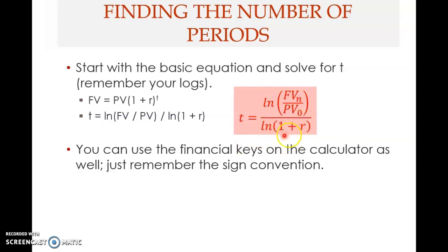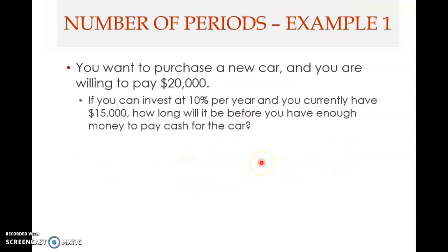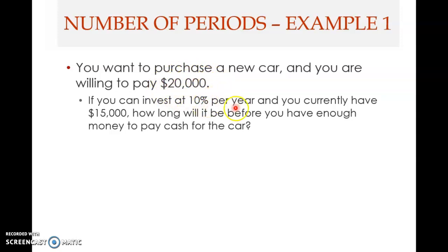When using the financial calculator or spreadsheet, remember the sign convention. Here is the example: you want to purchase a new car and are willing to pay $20,000. You can invest at 10% per year and currently have $15,000. How long will it be before you have enough money to pay cash for the car? The known elements are: future value = $20,000, present value = $15,000, interest rate = 10%. The unknown is the time — how long.